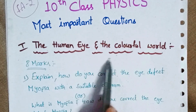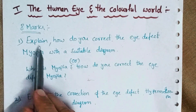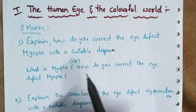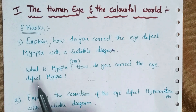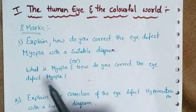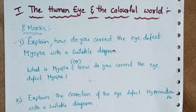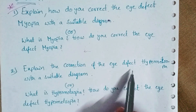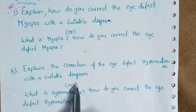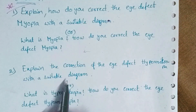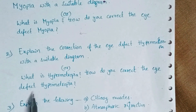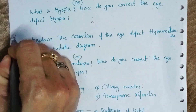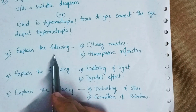From the first chapter, Human Eye and the Colorful World, the eight-mark questions are: First — explain how you correct the eye defect myopia with a suitable diagram, or the question may be asked as: what is myopia and how do you correct it? This is very important. Second — explain the correction of the eye defect hypermetropia with a suitable diagram, or: what is hypermetropia and how do you correct it?